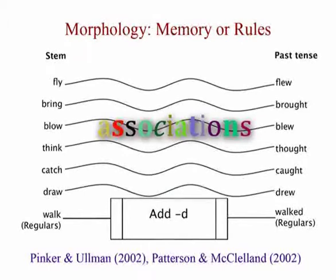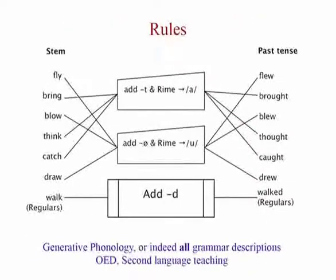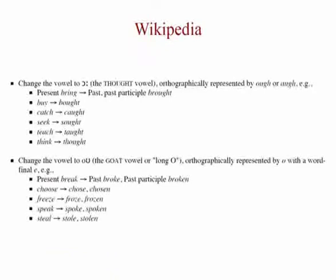Now let's look at the past tense case. Both sides of the past tense debate agree that irregular verbs are directly memorized. But if you're a linguist — or even if you just look at the OED, Wikipedia, or second language learning — irregular verbs are actually compositionally formed. Wikipedia says: change the vowel and add 't' for the following set of words. These are so-called lexicalized rules — they don't generalize, they just apply to a list. But it's still a computation: you compose the stem with the past tense morpheme to generate the output. That's very different from the consensus in the past tense debate.